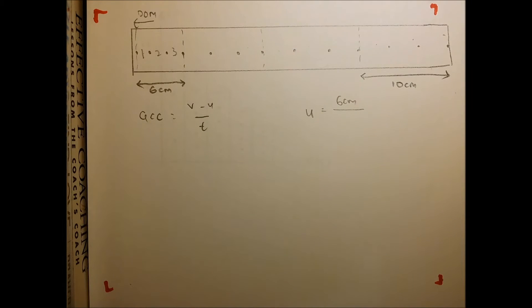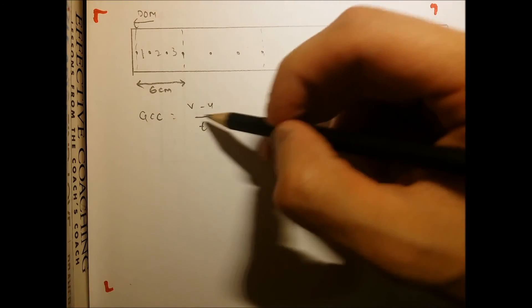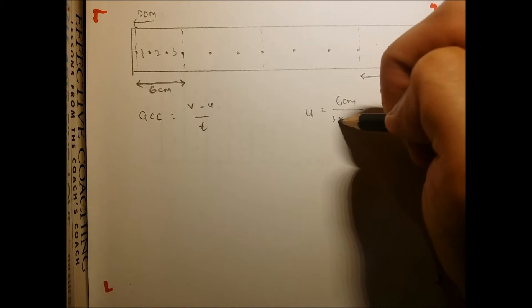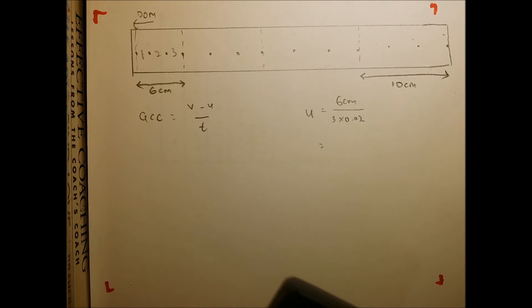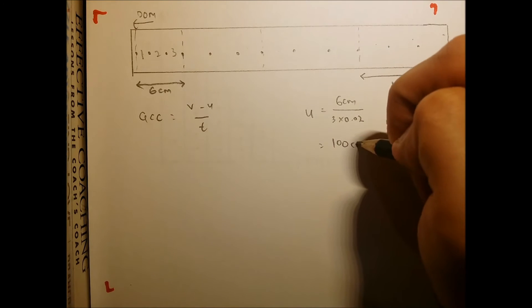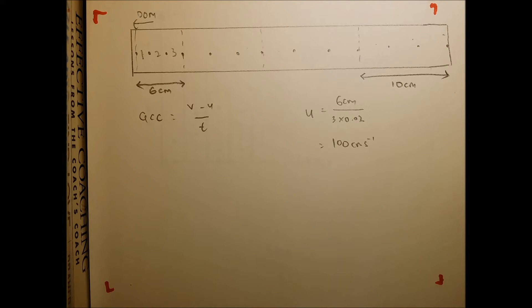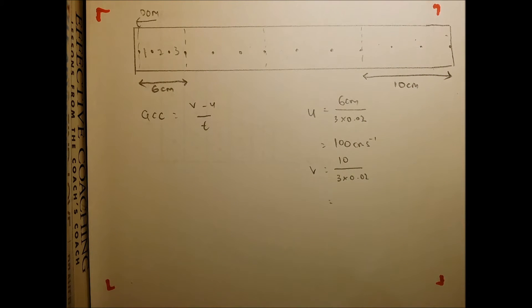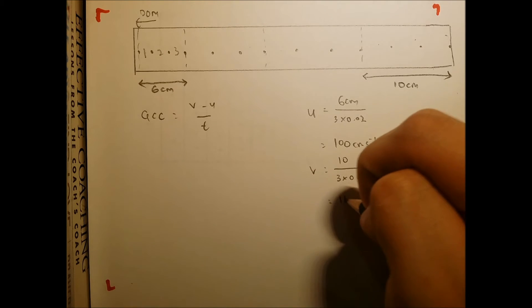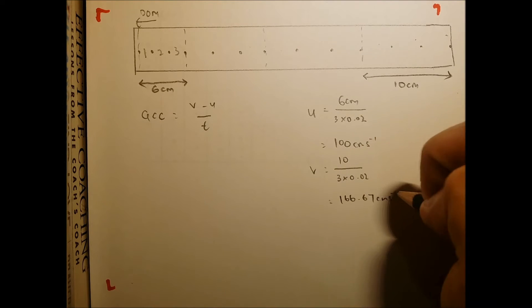When calculating the initial velocity, count 1, 2, 3 intervals within the section — no jumps needed here, as this is for velocity not acceleration time. So it's 3 times 0.02 seconds, giving 100 cm per second. Final velocity would be 10 divided by 3 times 0.02, which gives 166.67 cm per second.